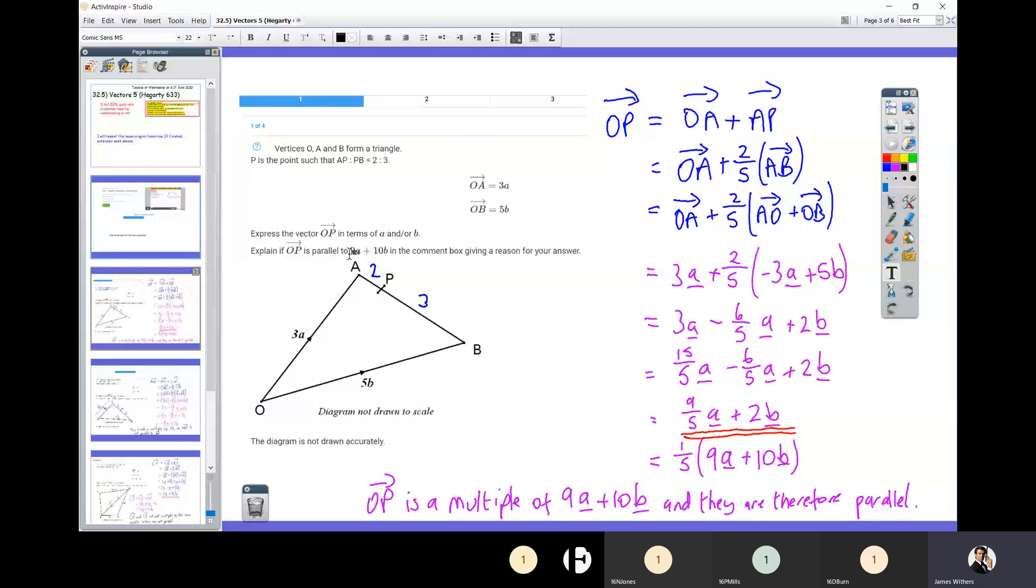Now that's my final answer with regard to what Hegarty is asking me to do—to express the vector OP in terms of a and b. Now what I then need to do is to decide whether it's parallel or not, and this is very much what you would have to do in the GCSE. So what I've chosen to do, because bearing in mind that a parallel vector would have the vector 9a plus 10b, I'm just picking and choosing how to factorize this to see whether I'm left with 9a plus 10b or not. Now I am, because if I take out a fifth—if I choose to factorize and take out a fifth—then I'm left with 9a plus 10b, because a fifth of nine is nine-fifths, a fifth of 10 is two. So because OP is a multiple of 9a plus 10b—it's a fifth of it—I can therefore conclude that OP is indeed parallel to 9a plus 10b.